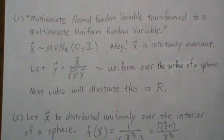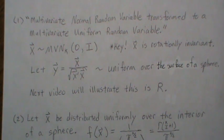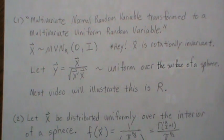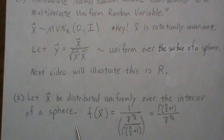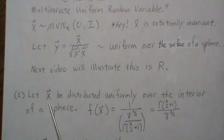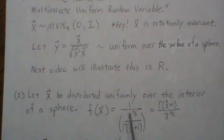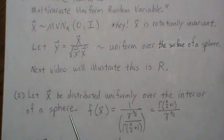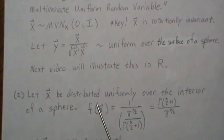Method two generates points in a cube, throws out certain points, then normalizes the remaining points, and those are distributed over the surface of a sphere. We let X be distributed uniformly over the interior of a sphere — inside a ball, or in two dimensions inside a circle — and we want to generate random points in that ball. The volume of the ball in any dimension k has a specific form.